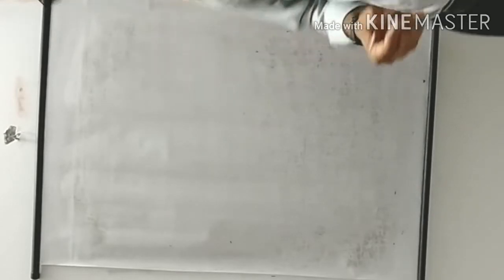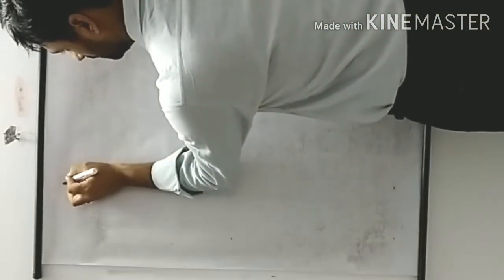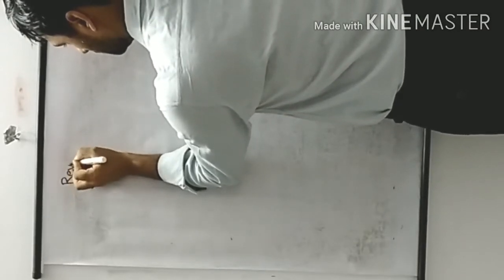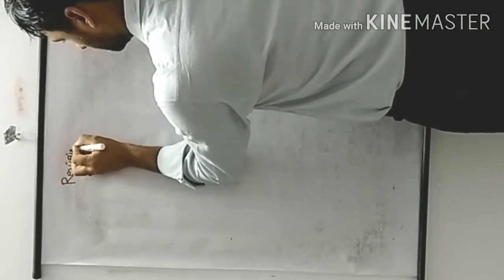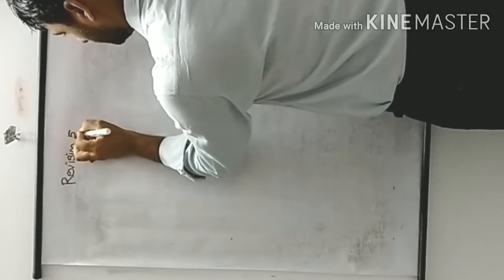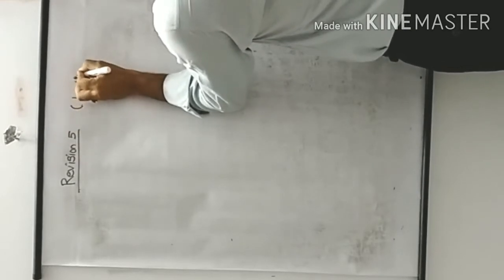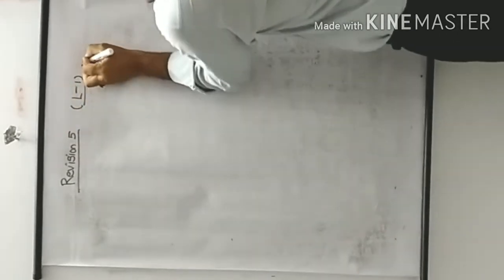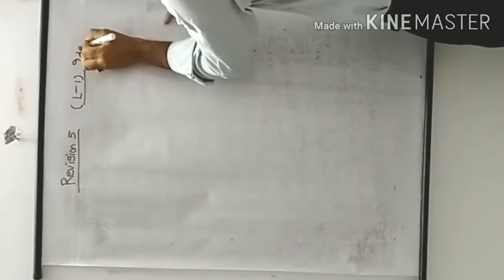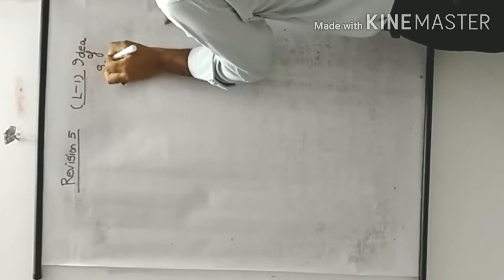Continuing with the exercise we had started yesterday, this is exercise 1-8, revision 5, chapter lesson 1. This is the idea of sets.